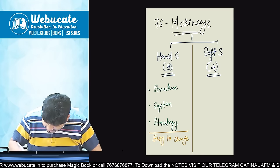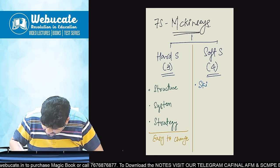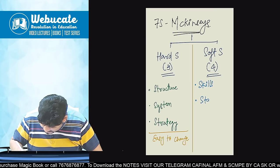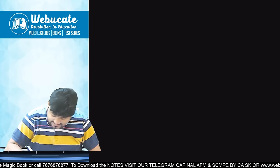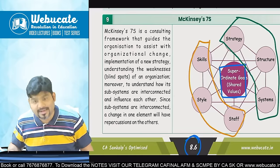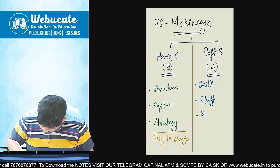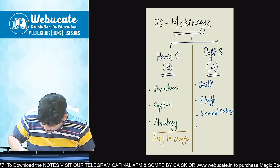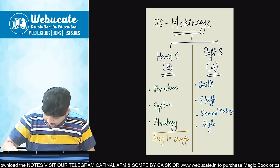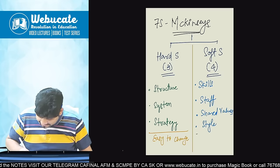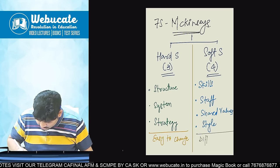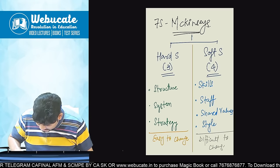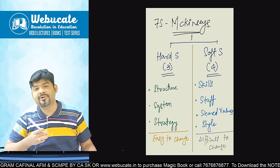As far as Soft S are concerned, it includes skills, staff, shared values, and style. These four things are difficult to change — so remember, the Soft S are difficult to change. This distinction can come as an MCQ in your exam.